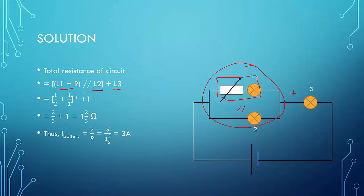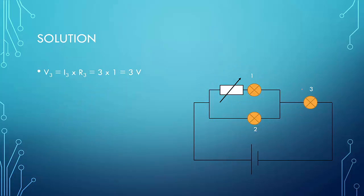I will leave it in fraction form because it is easier for calculation. The current coming out of the battery is just the voltage divided by the total resistance, so it is 5 divided by 1 and 2 thirds, giving 3 amperes. So there are 3 amperes coming out of the battery, and subsequently 3 amperes flowing through light bulb 3. Next, we calculate the potential difference across light bulb 3. Since it is 1 ohm and the current through it is 3 amperes, using Ohm's law the voltage across bulb 3 is 3 volts.